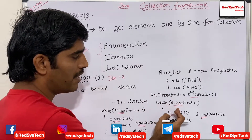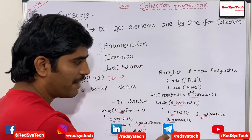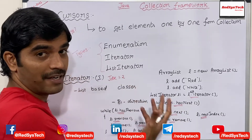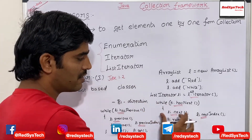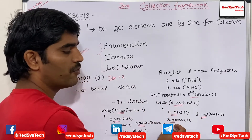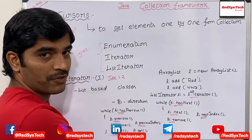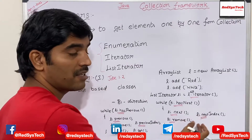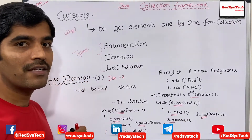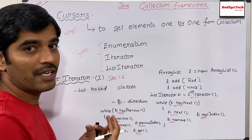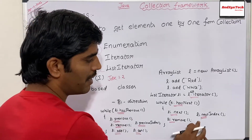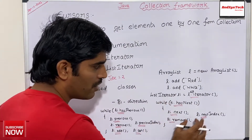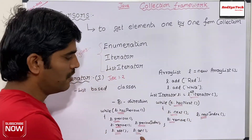Using that ListIterator object, I can navigate forward. Forward navigation uses the same methods as iterator: hasNext, next, and remove. They have also introduced one more method called nextIndex. If I want to get the index of the next element, I can call LL dot nextIndex. This is all about forward direction.